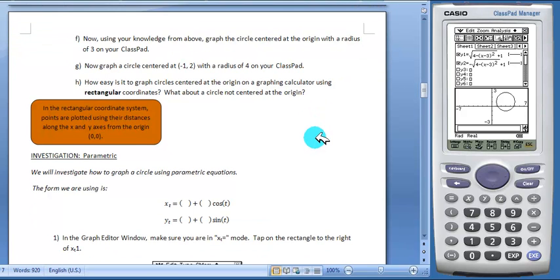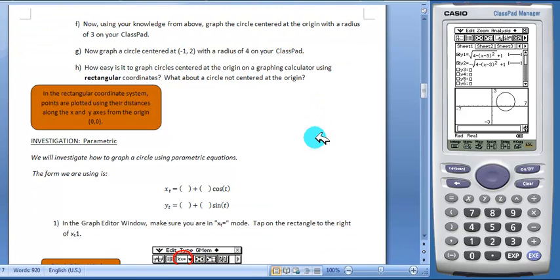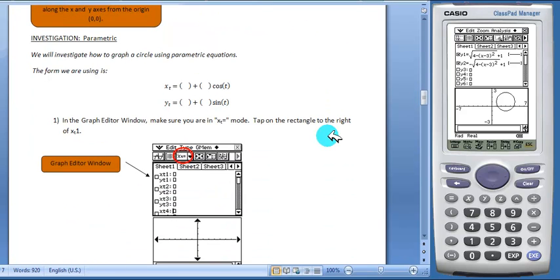The second investigation has students working with the parametric coordinate system. To graph functions in this form, make sure you are in x sub t mode. That's in this drop-down. And you can see that the form changes.